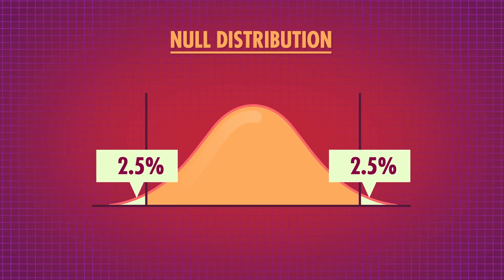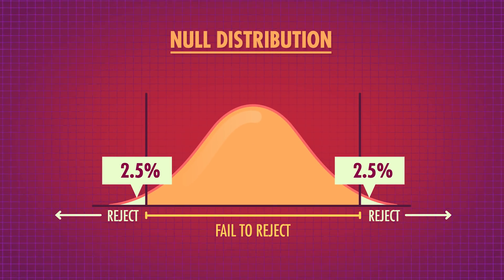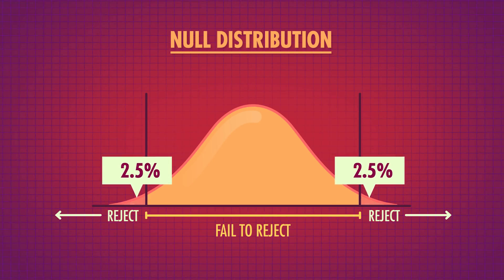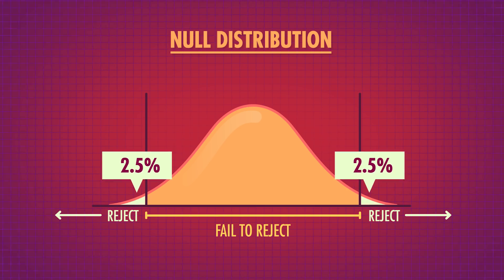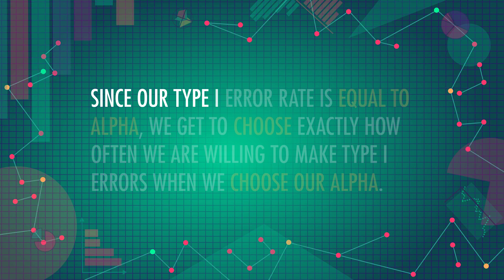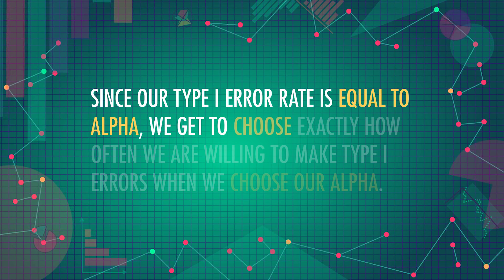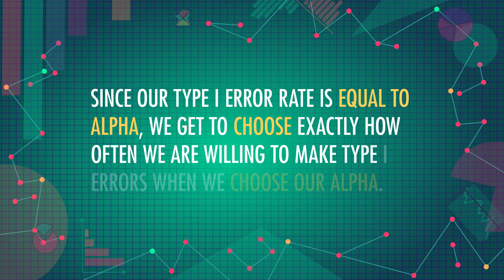Say we've decided that our alpha level is 0.05, so we'll reject the null if our p-value is smaller than 0.05. That means that our sample is in the 5% most extreme values we can expect to get if the null hypothesis were true. So if the null is true, 5% of the time we'd still reject it mistakenly just because we happened to get a rare value. The red shaded region represents all the values from the null distribution that would cause us to reject the null even if it was true. Since our type 1 error rate is equal to alpha, we get to choose exactly how often we're willing to make type 1 errors when we choose our alpha.